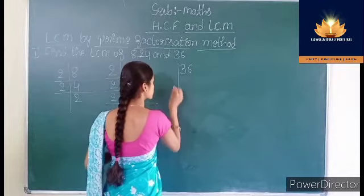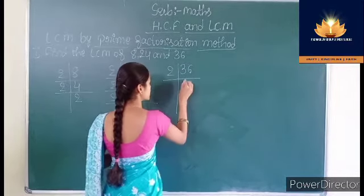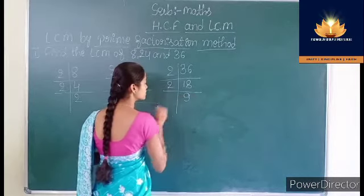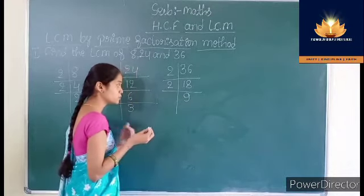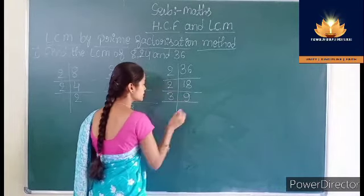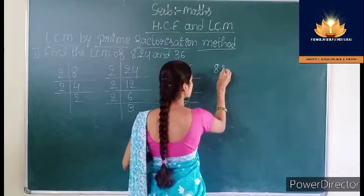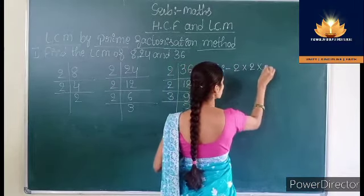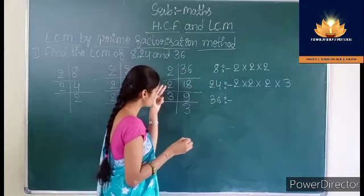Then for 36: 36 divided by 2 is 18. 18 divided by 2 gives 9. This 9 is not divisible by 2, so we take 3. 9 divided by 3 is 3. So the prime factors of 8 are 2×2×2, the prime factors of 24 are 2×2×2×3, and the prime factors of 36 are 2×2×3×3.